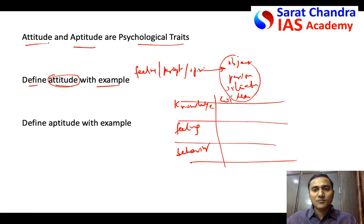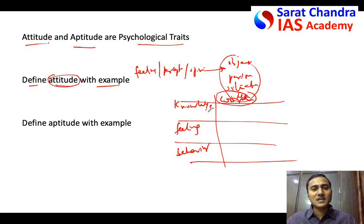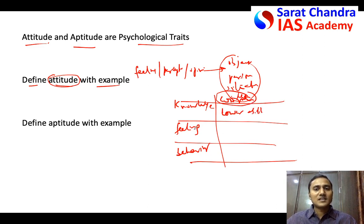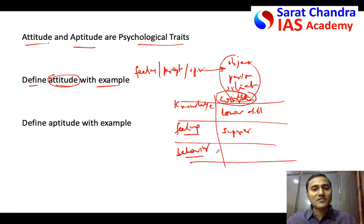For example, take the attitude of males towards females. If our knowledge is that females are inferior to males and have less physical, mental capacity, or management ability, then based on that wrong knowledge, we will feel superior to women. That feeling of superiority will come automatically. Based on that, our behavior will follow — for example, when working in a team with a woman, you may try to dominate her. This is called negative attitude towards women.